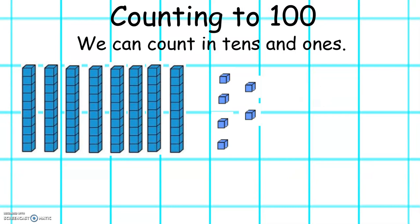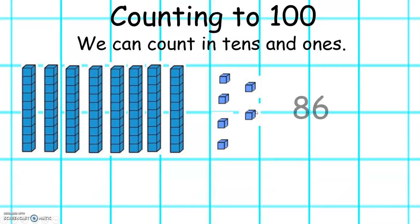Let's count in tens and ones: 10, 20, 30, 40, 50, 60, 70, 80, 81, 82, 83, 84, 85, 86. Our number is 86.